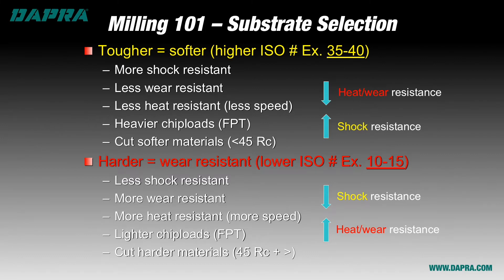On the flip side, harder grades of carbide will offer better wear resistance and heat resistance, but they'll be less shock resistant. This means they are more brittle and won't generally take the same abuse — including chip loads and chatter — that a tougher grade will absorb. Harder grades of carbide are generally used for finishing work and for machining of harder materials above 45 Rockwell. Notice the ISO numbers indicated by each type of grade. A higher number in the 35 to 40 range represents a tougher grade of carbide; a lower number, perhaps in the 10 to 15 range, represents a harder grade. If the catalog doesn't tell you directly, the numbers will tell you indirectly.